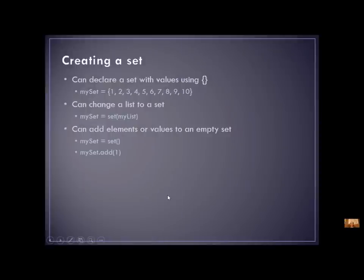When you're going to use a set, first of all, you have to create it. There are three different ways that you can create a set. One way is to use the curly brackets. You know in a list, you use the square brackets. For a set, you're going to use the curly brackets. So you can just declare it if you know what the elements are in your set. But a lot of times you're going to be doing them randomly or asking the user for numbers. So this is one way, but it's not always a practical way.